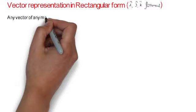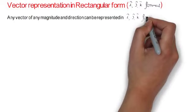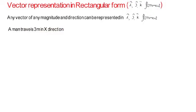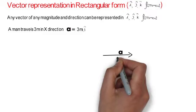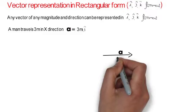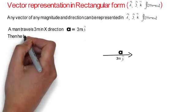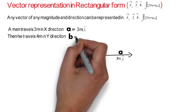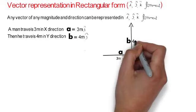I will call it the IJK form. Any vector of any magnitude and direction can be represented in the IJK form. For example, let us say a man travels 3 meters in the x direction. I can represent his displacement by vector a, such that a = 3m î. Then he travels 4 meters in the y direction, represented by vector b, such that b = 4m ĵ.